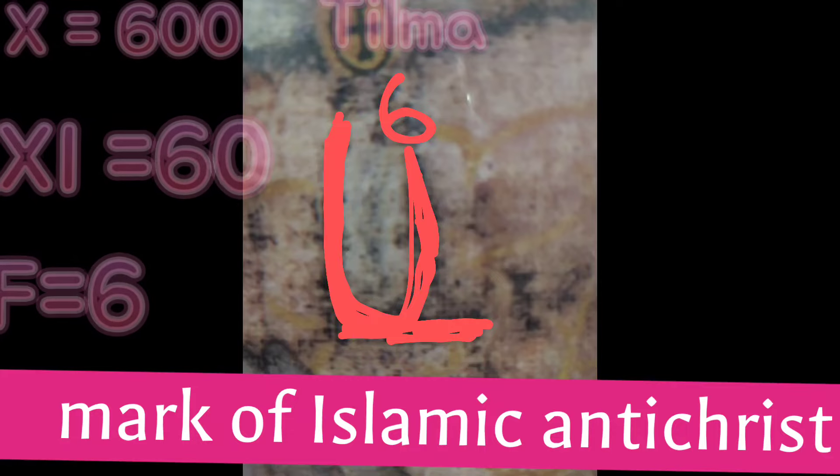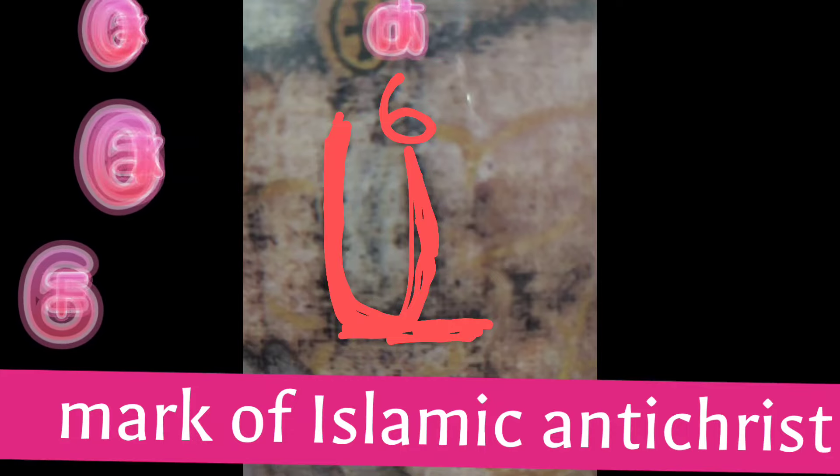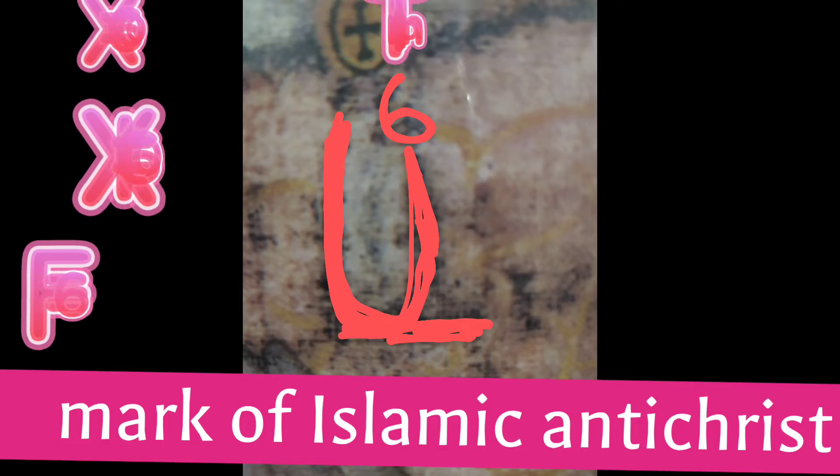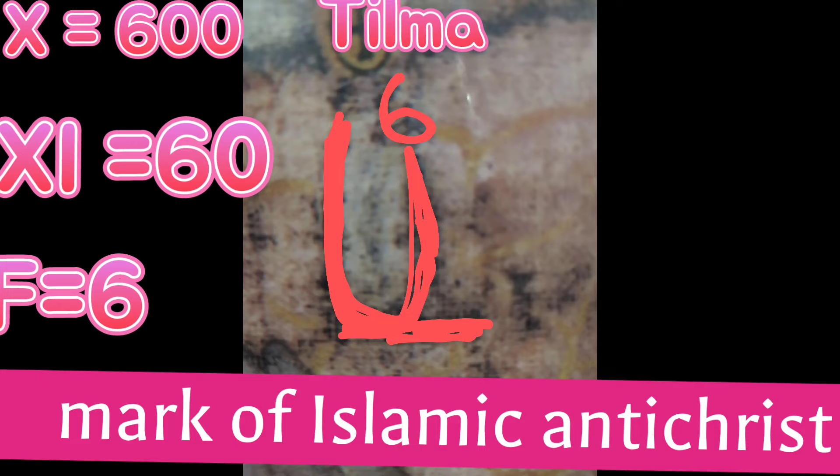Here I'm going to show you what the letter F is. It's the ancient digamma. X is 600, xi is 60, and F is the digamma — 666 in Greek is the letter F. The digamma refers to the antichrist. You can see on the Tilma of Guadalupe it is written horizontally; the antichrist will write it horizontally. There's a six on one of the horns — there are two horns on the F. It represents the crescent of Islam, the Islamic antichrist, and the devil.